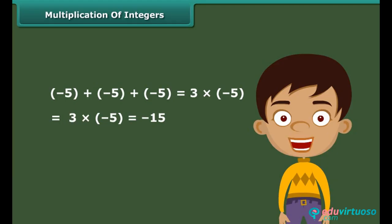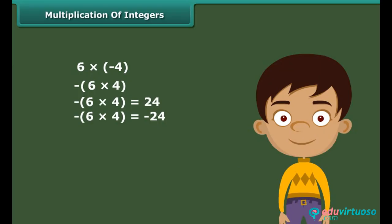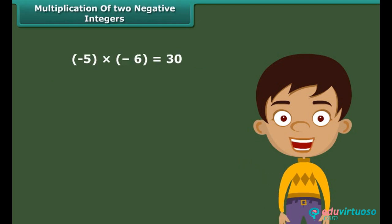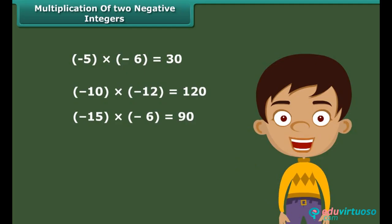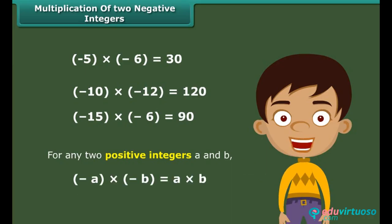Let's now find the product of a positive and a negative integer. First multiply 6 by 4, then put a minus sign before the product — we get −24. Similarly, 5 times (−4) equals −(5 times 4) which equals −20. The product of two negative integers is a positive integer — we multiply the two negative integers as whole numbers.